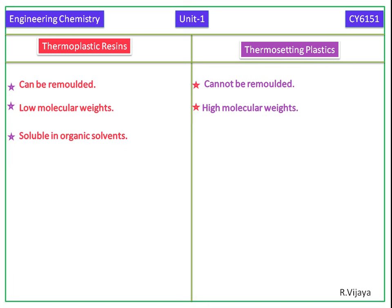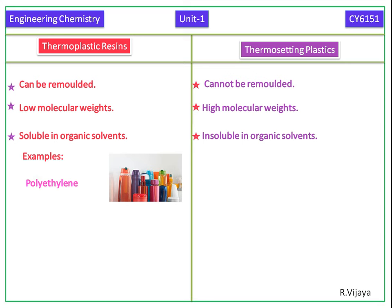Thermoplastics are soluble in organic solvents. Thermosetting plastics are insoluble in organic solvents. Examples of thermoplastic resins are polyethylene, polyvinyl chloride and polystyrene.